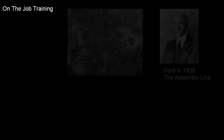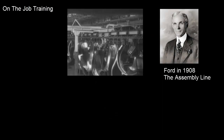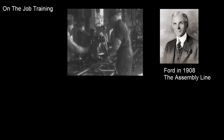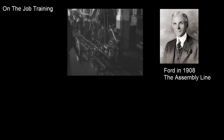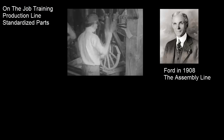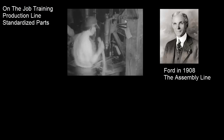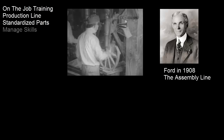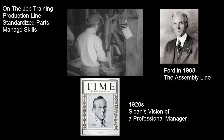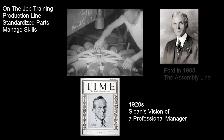At the turn of the 20th century, to meet the demand for automobiles, owners reduced their dependence on master craftsmen. Ford created a production line with standardized parts, so less skill was needed to build a car. At General Motors, Sloan hired professional managers to blend the skills of the employees.